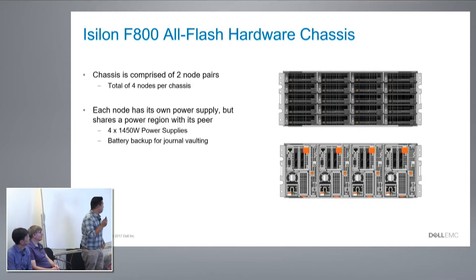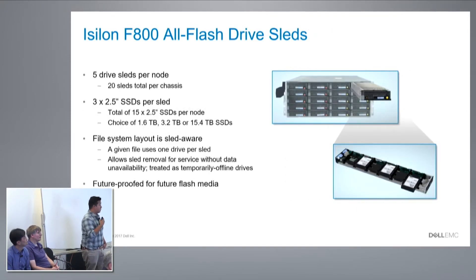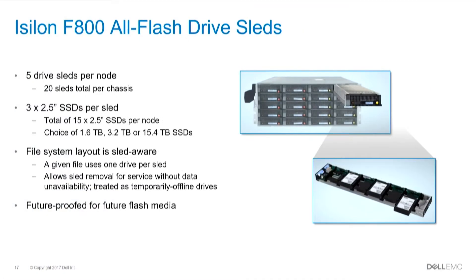The journal is on system DRAM, which also has battery backup for vault operations. On the front side, we have drive sleds — five drive sleds per compute, twenty total. In the case of the F800, three and a half inch SSDs per sled: 1.6, 3.2, and 15.4 terabyte. The file system layout is aware of the sleds, so a given file uses one drive per sled. We have the ability to service a drive without causing any unavailability.